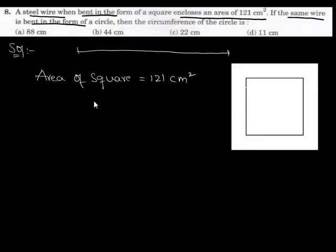If we take the unknown side of the square as S, then its area becomes S² = 121 cm². By applying square root on both sides, we get the value of S = 11 cm. This is because 121 is a perfect square, so its square root is 11.